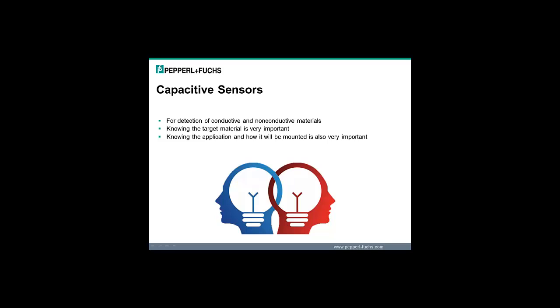Capacitive sensors can detect both conductive and non-conductive materials. An inductive sensor can detect only metal, but a capacitive sensor can detect a variety of materials. Knowing the target material and how the capacitive sensor will be mounted are very important in determining whether a capacitive sensor will work in your application.